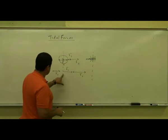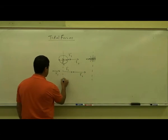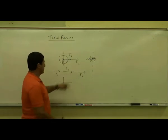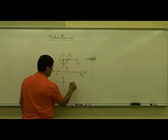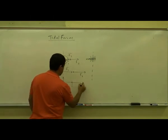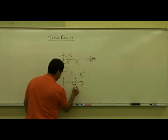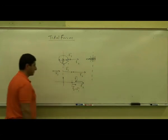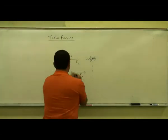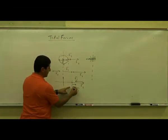To determine the amount of that tidal force, with respect to the reference frame of the center of the earth, we ask: what's the net force on the right side of the earth? The net force at the right side of the earth is the difference of these two forces, F2 minus F1. So this side of the earth, with respect to the center's reference frame, is being pulled with a net force equal to F2 minus F1.